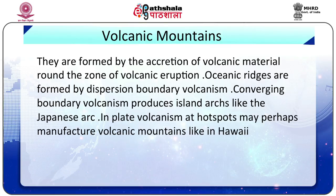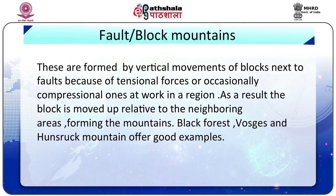Next are volcanic mountains. They are formed by the accretion of volcanic materials around the zone of volcanic eruption. Oceanic ridges are formed by divergent boundary volcanism, and convergent boundary volcanism produces island arcs like the Japanese arc. In-plate volcanism at hotspots may manufacture volcanic mountains, as in Hawaii. The third type is fault block mountains, formed by vertical movements of blocks next to faults due to tensional or occasionally compressional forces. The block is moved up relative to neighbouring areas, forming mountains. Black Forest, Vosges and Hunsrück mountains offer good examples.